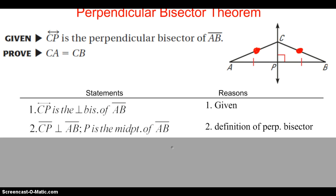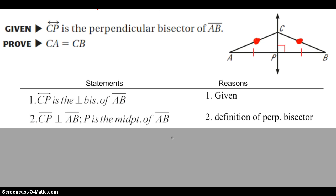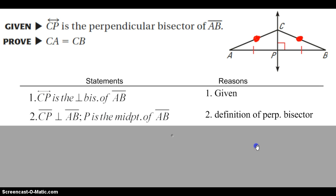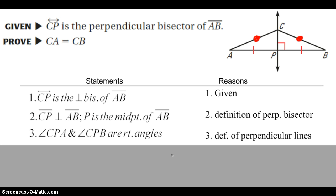Now, what do we know about perpendicular lines? If lines are perpendicular, they form right angles. So using the definition of perpendicular lines, we can say that angle CPA and angle CPB are right angles.